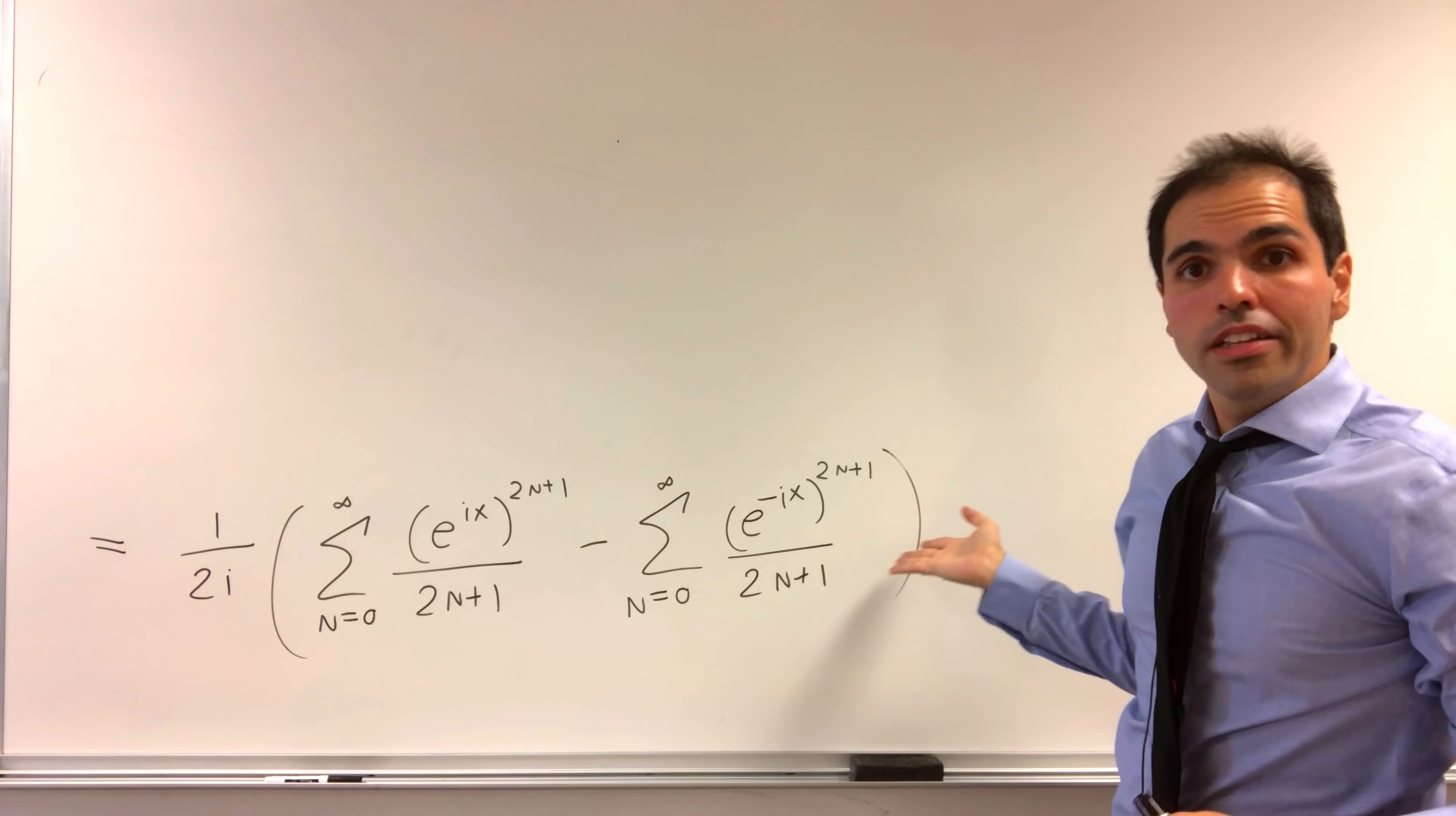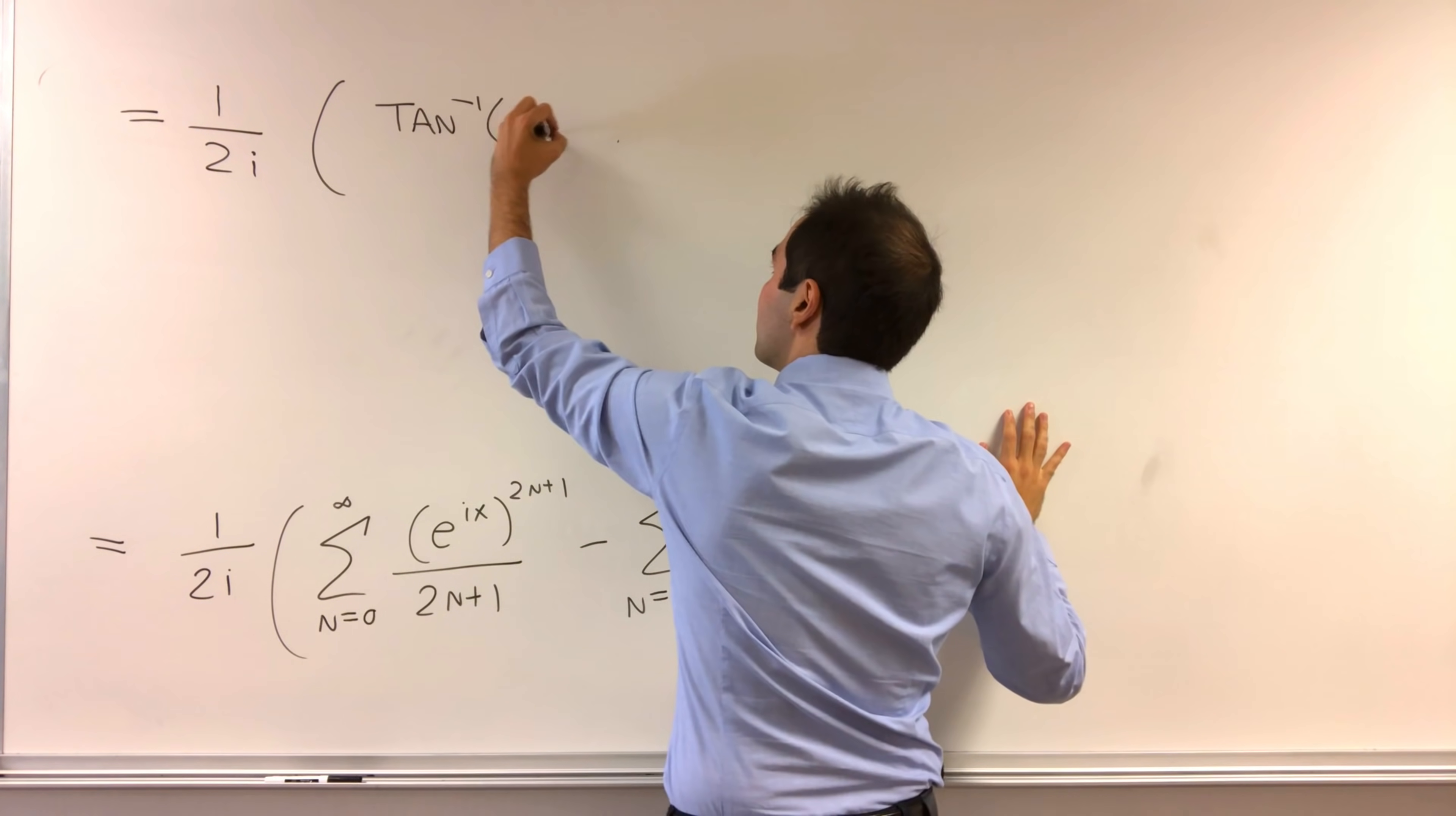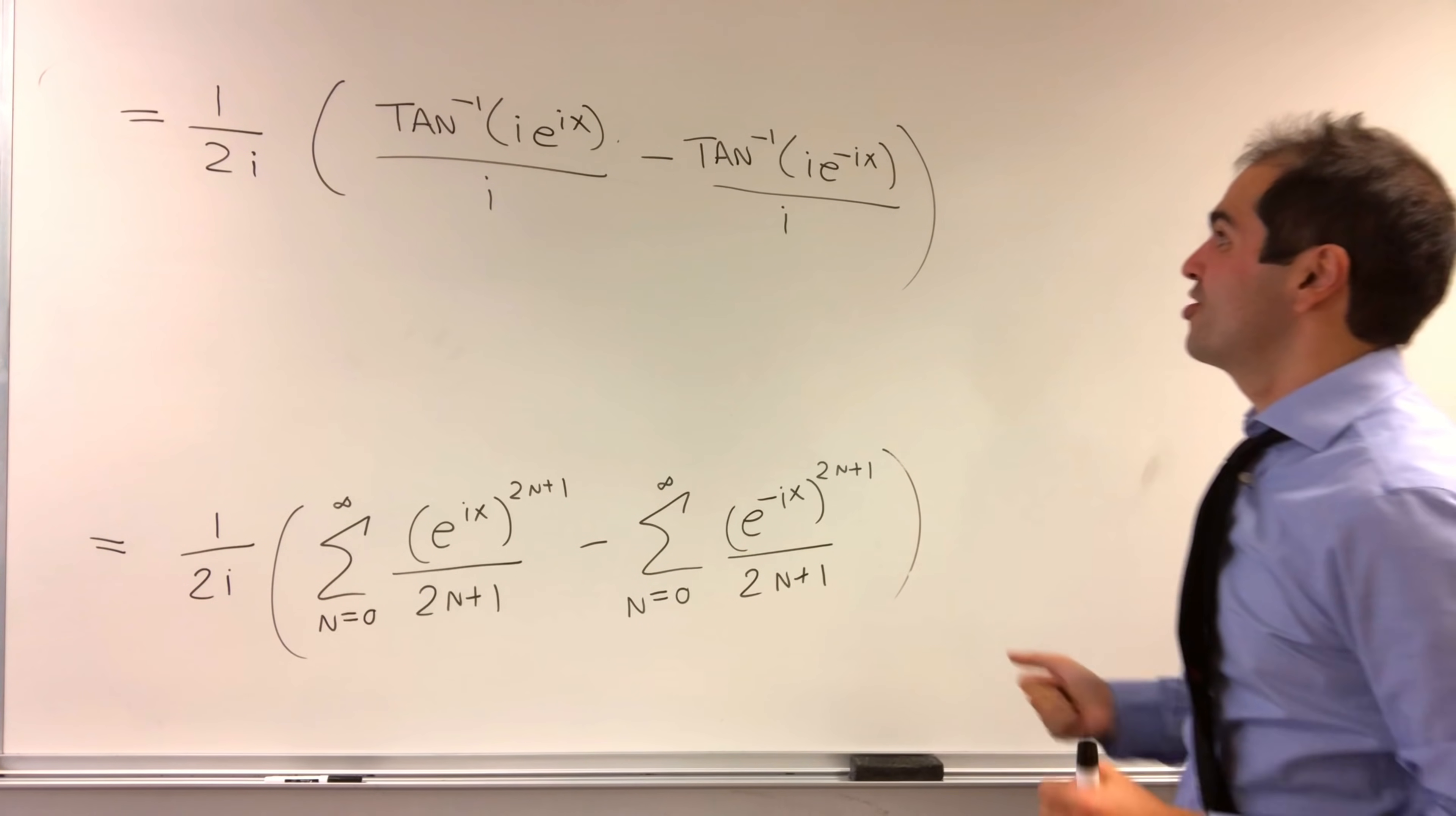Well, remember, this very complicated sum simplifies to the following. 1 over 2i, this becomes arctangent of i, before we had ix, but now i e to the ix, and then minus arctangent i e to the minus ix over i. So nice thing, no more sums, basically.